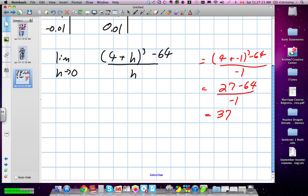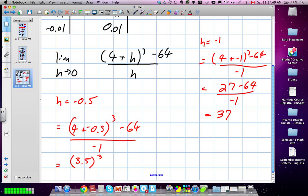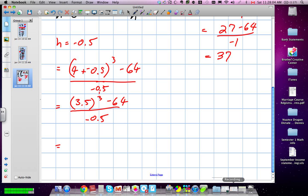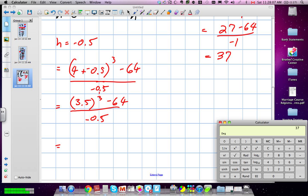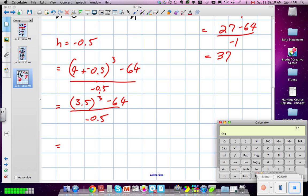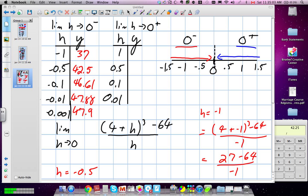Okay. Now let's make this number smaller. So this is when h was negative 1. So h is negative 0.5. So we are going to get the value of 4 plus negative 0.5 cubed minus 64 divided by negative 0.5. So this will give us 3.5 cubed. Okay, so we're going to need to use calculators here.